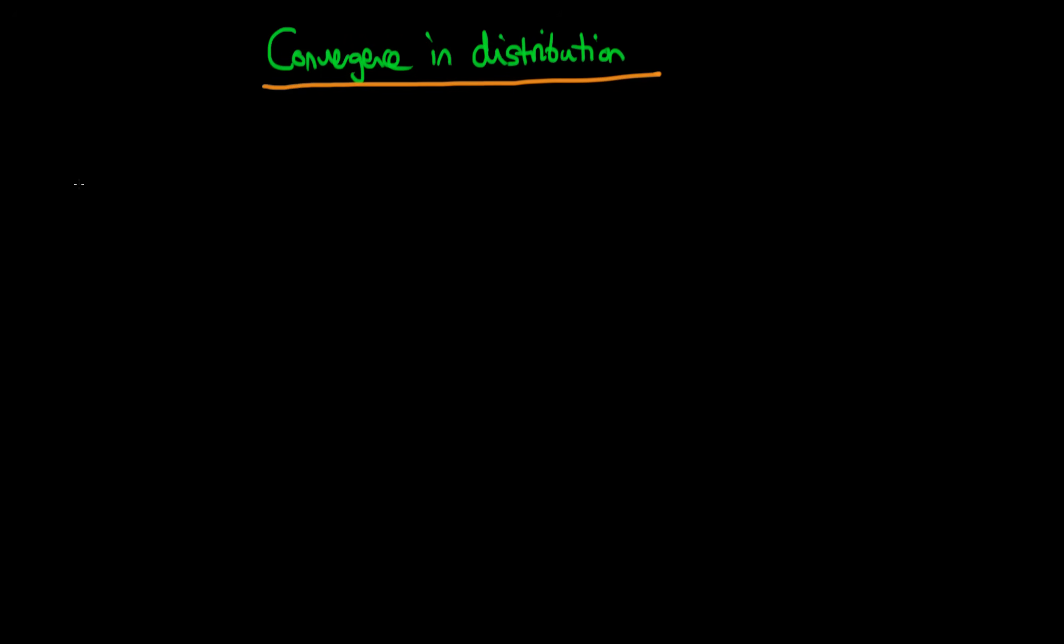In this video I want to talk about what it means for a random variable to converge in distribution. We write this in a similar way that we did for probability, except now we write a D above the arrow, and then sort of write it all exactly the same.